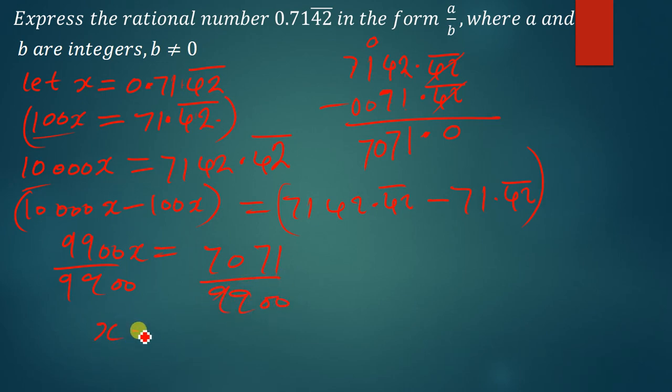The value of x becomes 7071 over 9900. Is there a way we can simplify that? If it's possible for us to simplify that then we have to find a number that can go into these numbers. I think 3 can go into the numerator and the denominator.